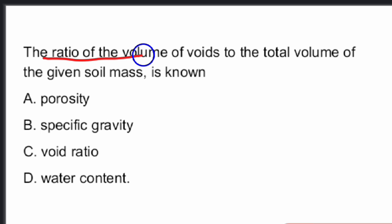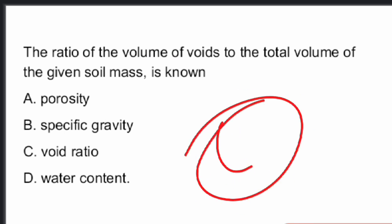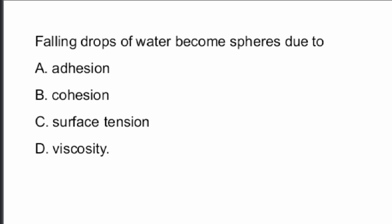Next question: The ratio of the volume of voids to the total volume of a given soil mass is called what? The answer is void ratio — Option 3 is the right answer.